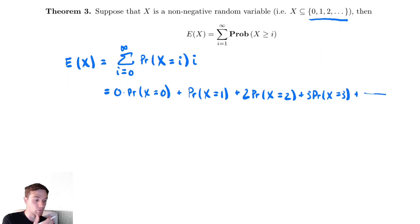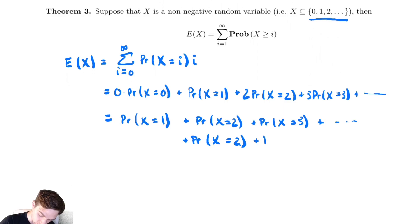I am going to rewrite this in a sort of funny way. I am going to write it as the probability. This first one doesn't matter because it's just 0 times something. We are going to write the probability that x equals 1 plus the probability that x is equal to 2. Purposely ignoring the coefficient. Plus the probability that x is equal to 3 and so on. And then after I am done adding up all of those, all infinitely many, I am going to add on the probability that x is equal to 2. Plus the probability that x is equal to 3 and so on.